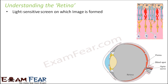The retina is the light-sensitive screen on which the image is formed. There is an object, there is a lens, and there is an image which is formed on this screen called retina. It has light-sensitive components — cells in the retina which can sense and receive light. That is why they are called photoreceptor cells.